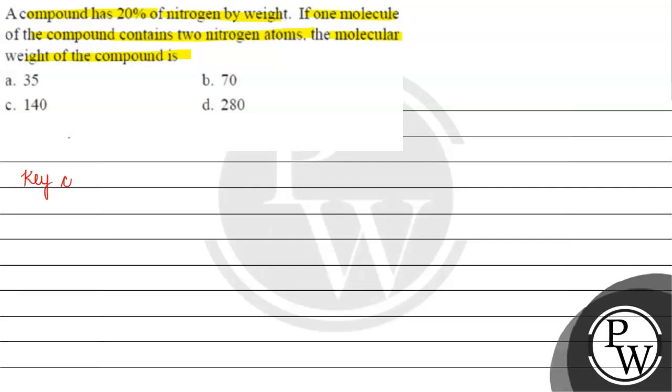The key concept for this question is mass percent of an element. Mass percent of an element in a compound equals mass of that element divided by the total mass of the compound, multiplied by 100.